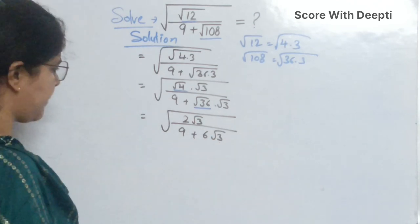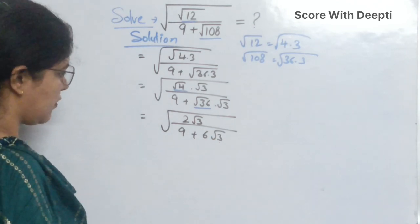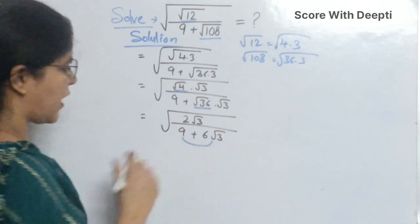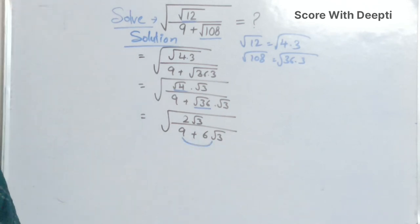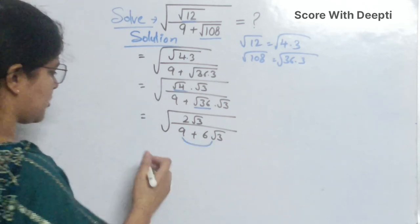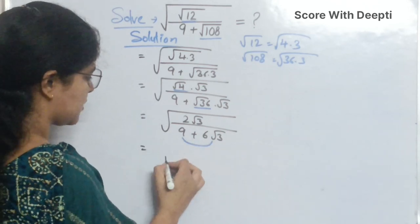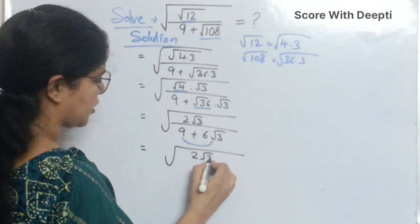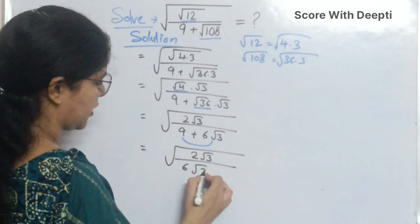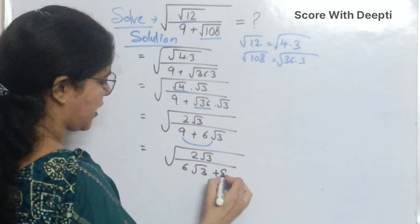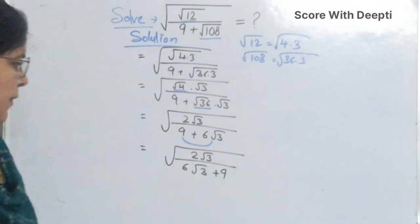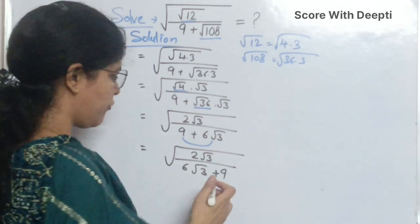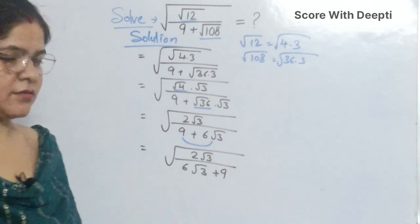Our next step: we exchange the position of 9 and 6 square root 3, and write square root of 2 square root 3 over 6 square root 3 plus 9. Next, to solve this we rationalize.